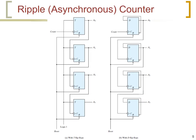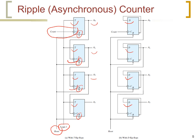Now let us look at the same counter but using a different type of flip-flop. What we just used were D flip-flops. Now we will explain the same counter using toggle flip-flops, or T flip-flops. All T inputs are connected to logic 1. As before, we have a reset input connected to the R of all flip-flops, and the count input is given to the first flip-flop.